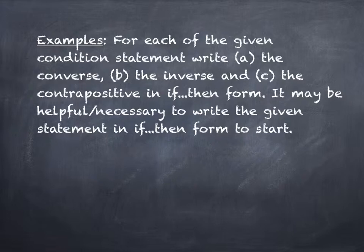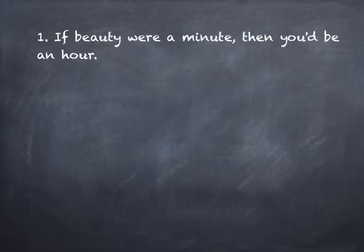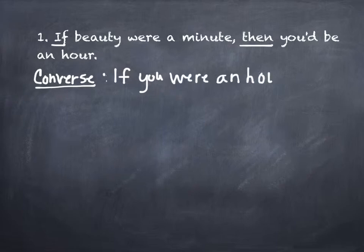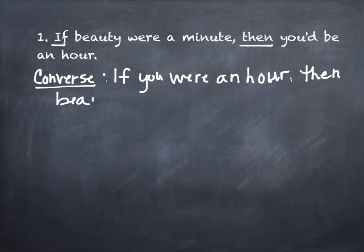On these examples we're going to take the given conditional statement and write the converse, the inverse, and the contrapositive in if-then form. In some cases it might be necessary to change the original statement into if-then form first. The first one is a pickup line: if beauty were a minute, then you'd be an hour. This is already in if-then form, so we jump right in with the converse. The converse reverses the order: if you were an hour, then beauty would be a minute.